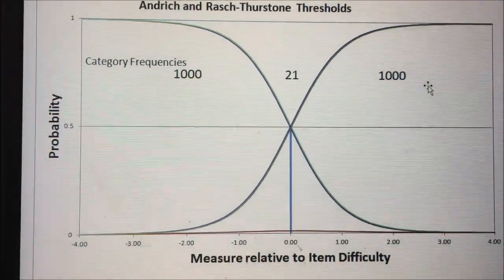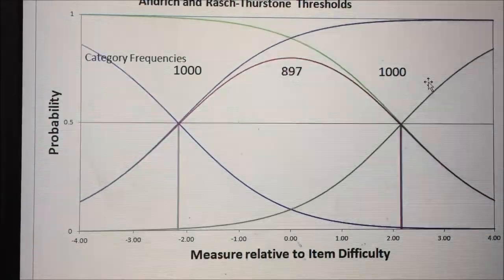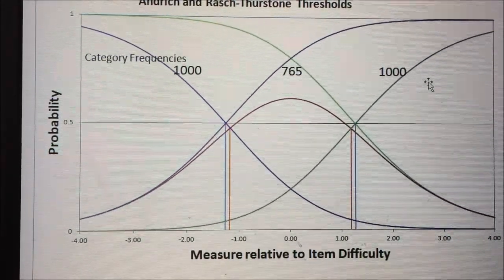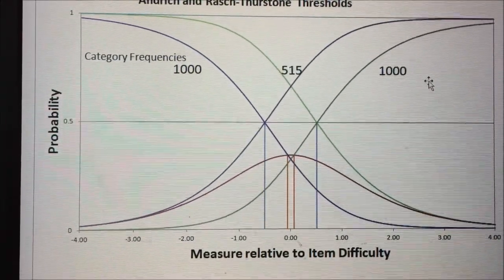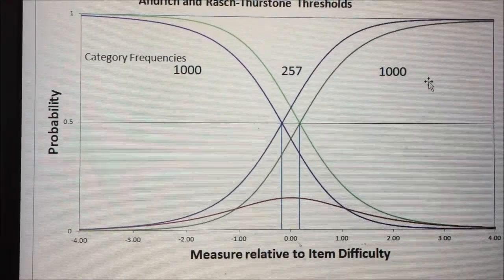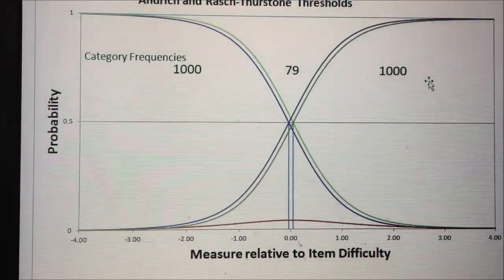This demonstration shows what happens to thresholds as the intermediate category frequency decreases. In this picture we see the first and thresholds indicated by blue lines getting closer and closer together.